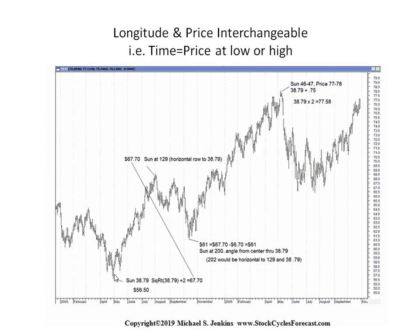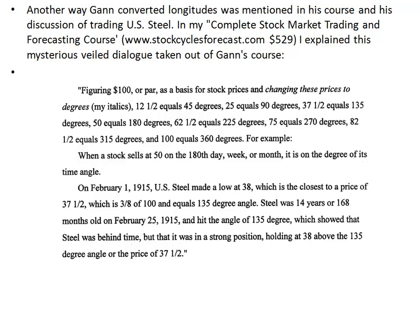Another way Gann converted longitudes was mentioned in his course, in his discussion of trading U.S. Steel in my Complete Stock Market Trading and Forecasting course. I explained this mysterious, veiled dialogue this way — it confused me in my younger years when I got the Gann course; I read it over and over again and it didn't make sense. He says: figuring $100 or par as the basis for stock prices, and changing these prices to degrees — 12.5 equals 45, 25 equals 90, 37.50 equals 135, 50 equals 180, etc.